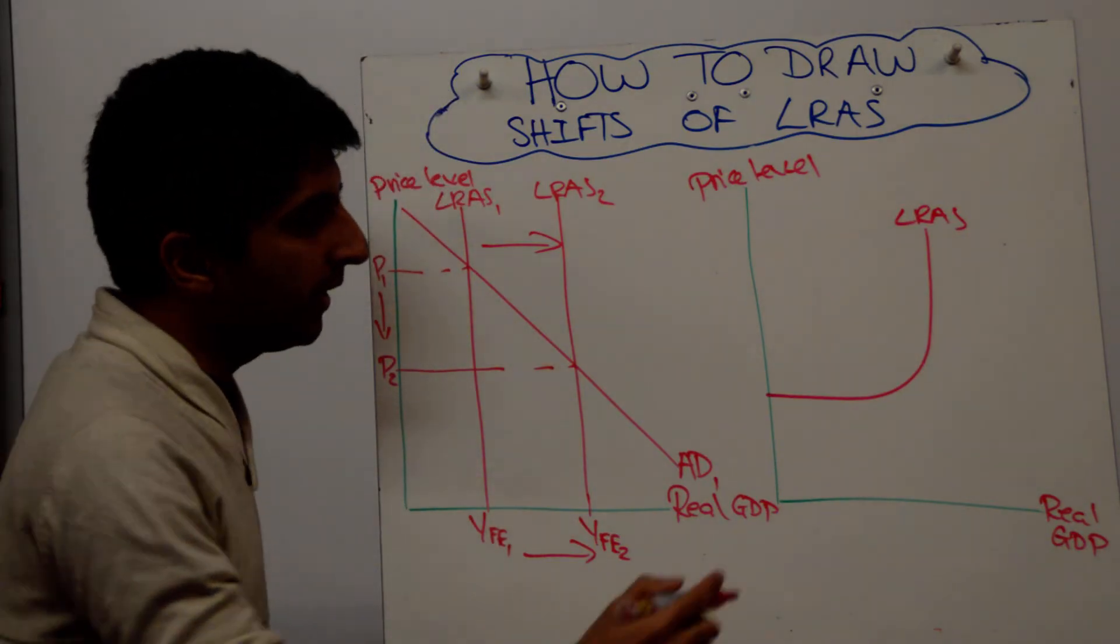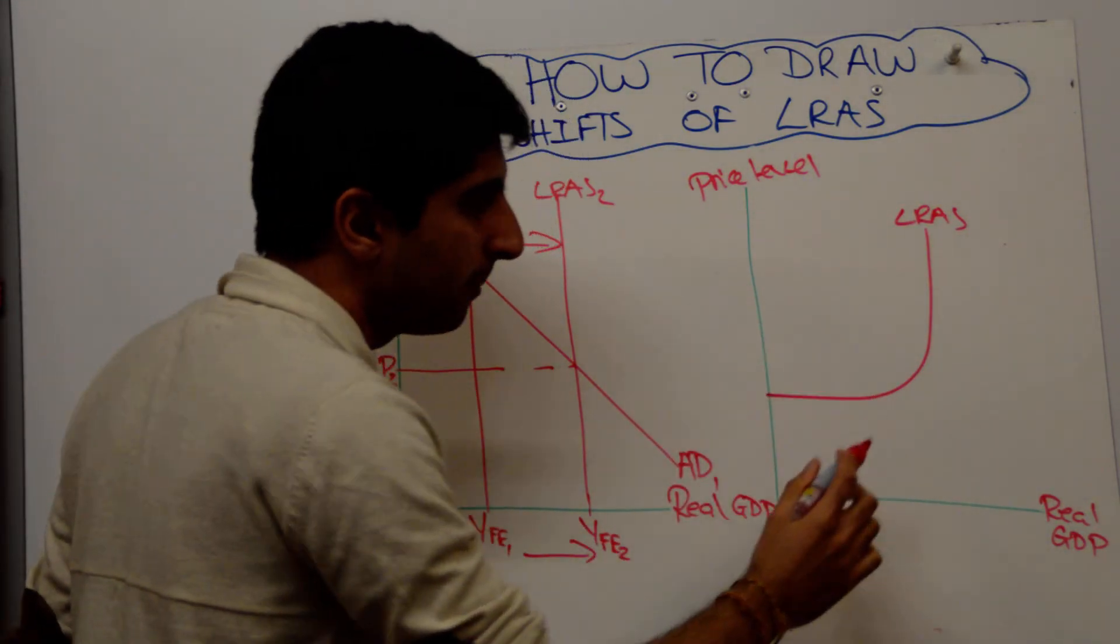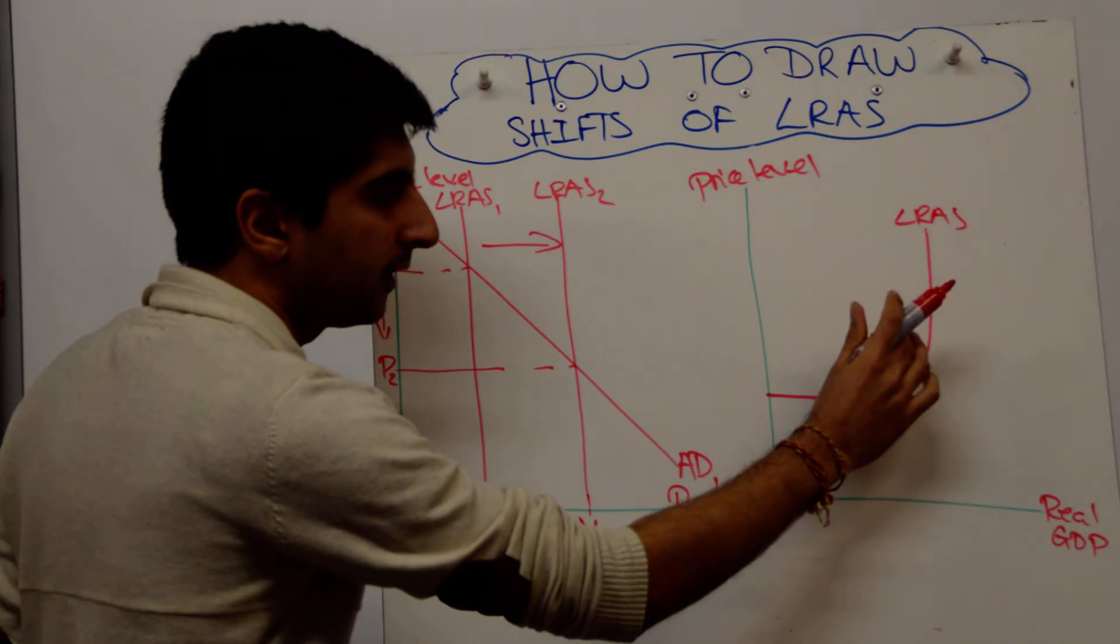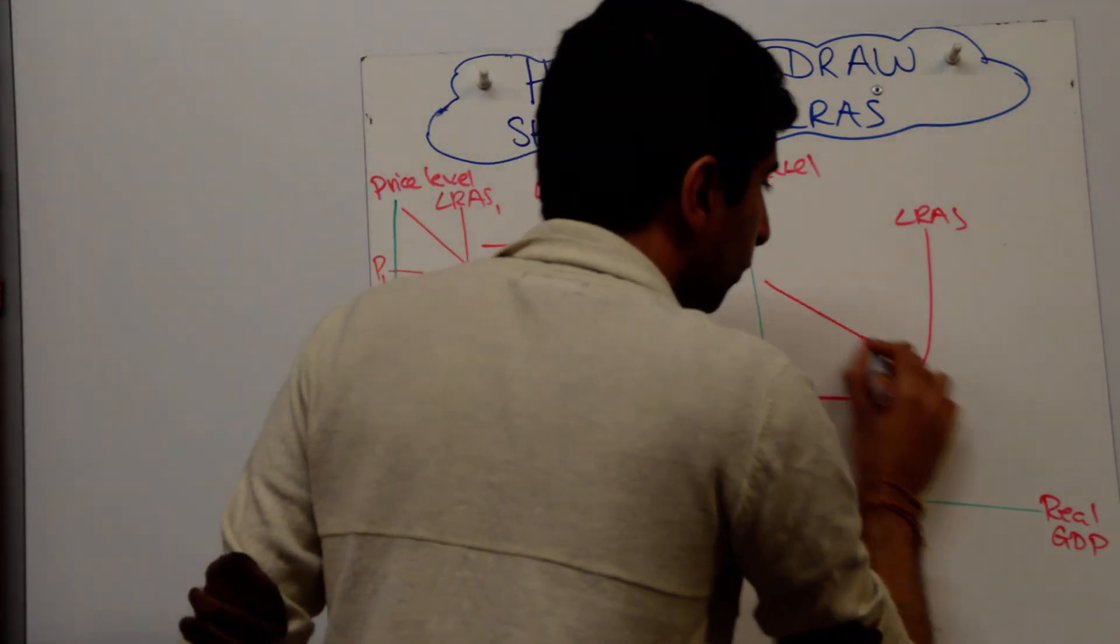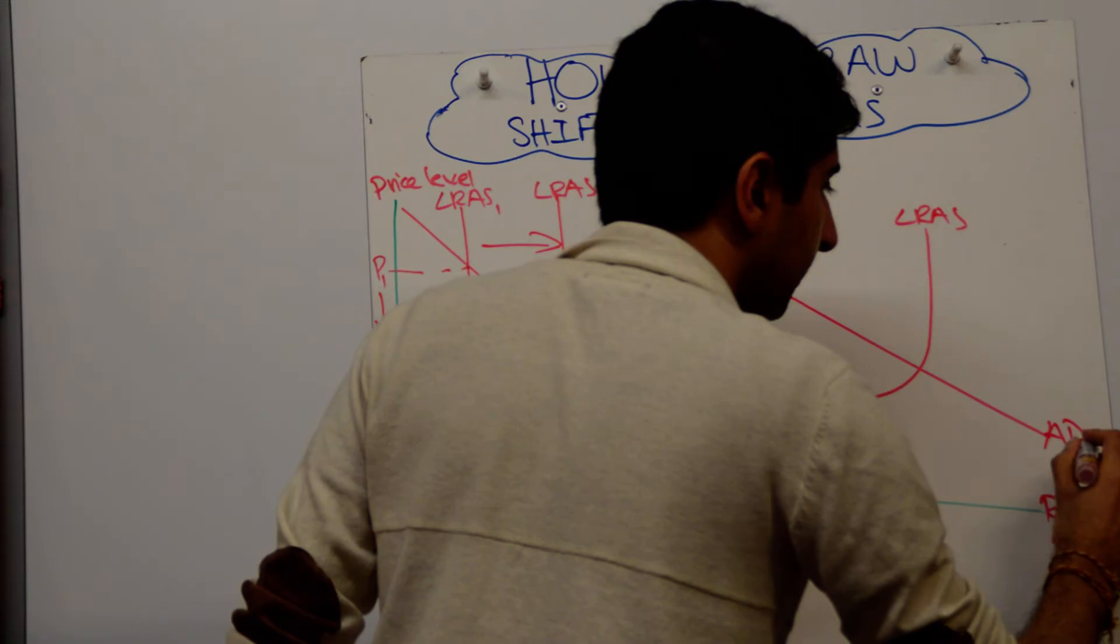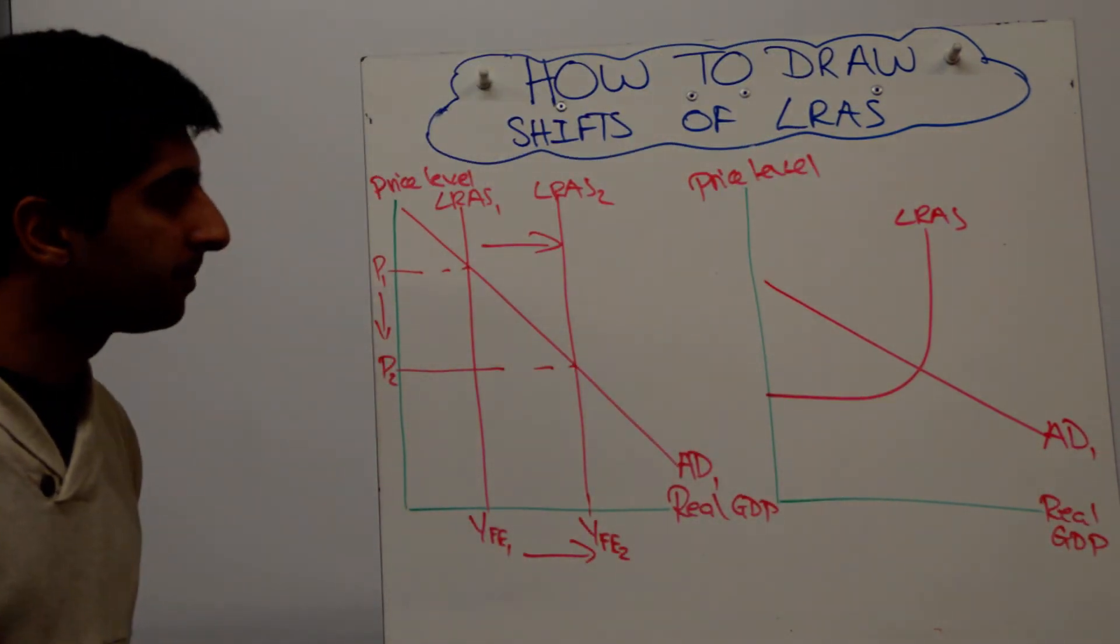Now, what you need to do here is to make sure that you draw your aggregate demand cutting LRAS in this curved path. So make sure you draw your AD curve like that. It's going to help you get the next part right.